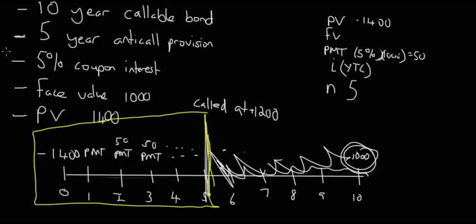We've got our 1400 going on for 5 years. We've got our payment, which is 5% of 1000, which is 50. It would have continued all the way to the end, but the company swooped in and said we're not going to carry on paying this crazy interest rate. We're calling in this bond to reissue bonds at a lower interest rate. They've called it at 1200. So you've got your PV, FV, PMT, N, and now solve for I. The yield to call comes out at 0.75%.